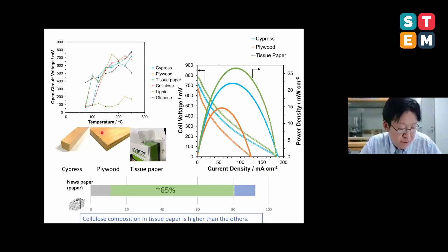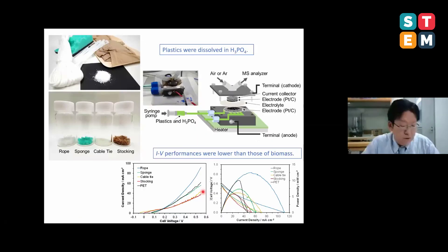In addition to cellulose as a fuel, we used actual biomass such as cypress, plywood, and tissue paper. The obtained power density reached 25 mW per square cm for tissue paper, because the composition of cellulose in tissue paper is higher than the others.